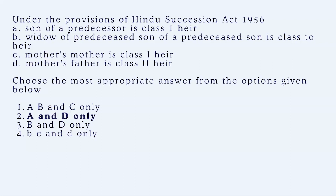This topic is often asked, so you need to remember it — study it two to four times and you will. If you consider the schedule accordingly, option A, which is 'son's son,' is a Class 1 heir, and option D, which is 'mother's father,' is a Class 2 heir. The remaining statements B and C are incorrect.